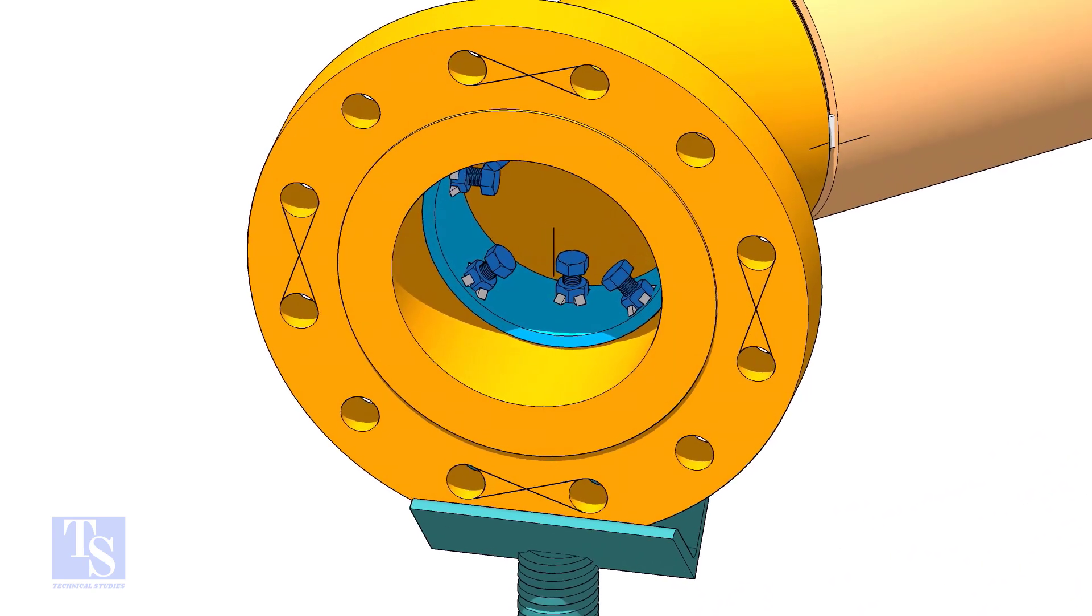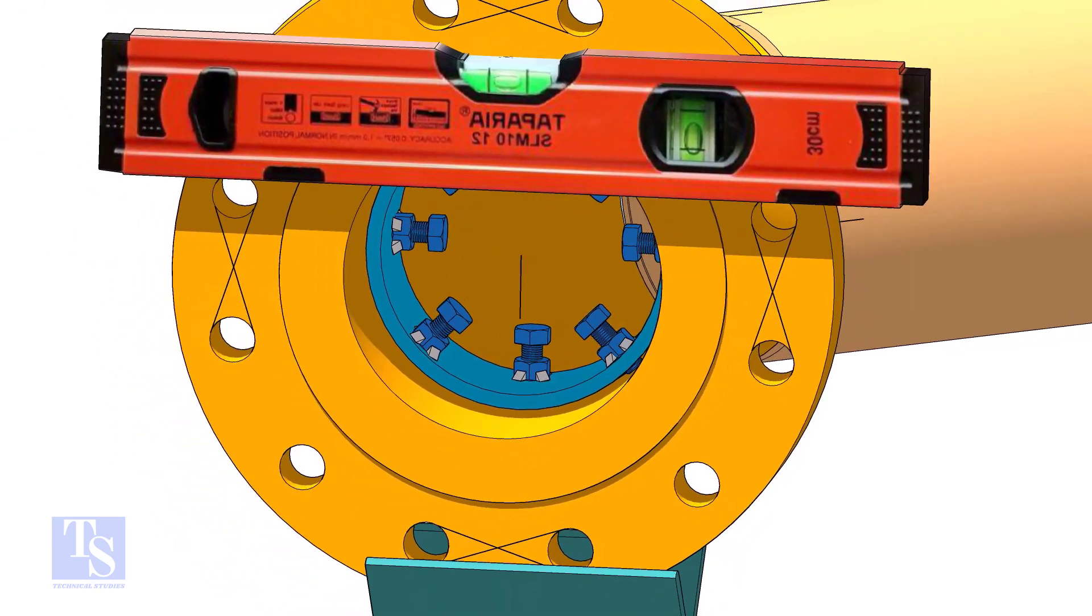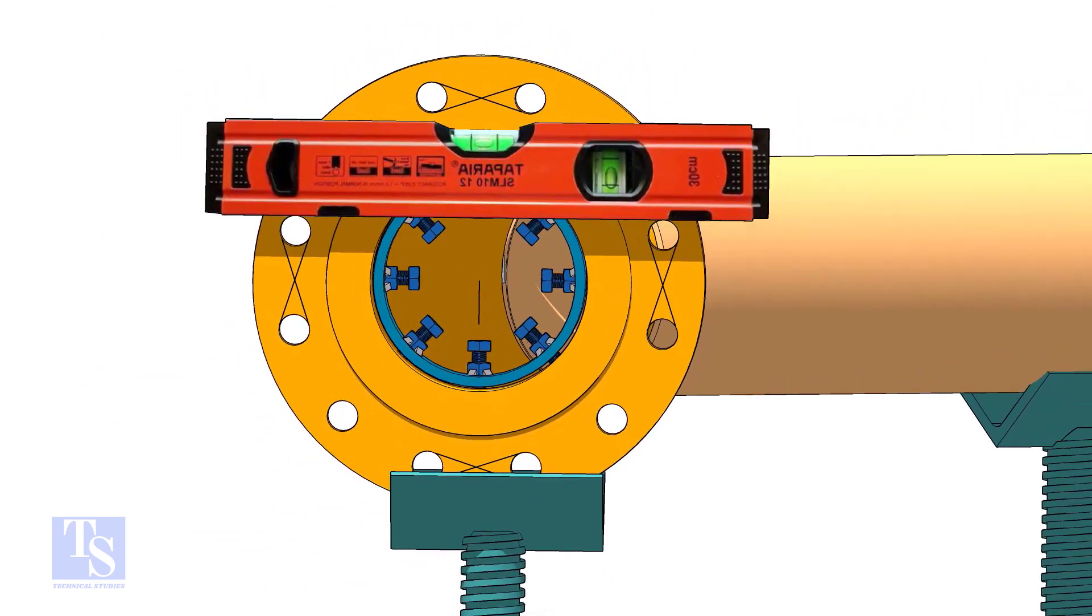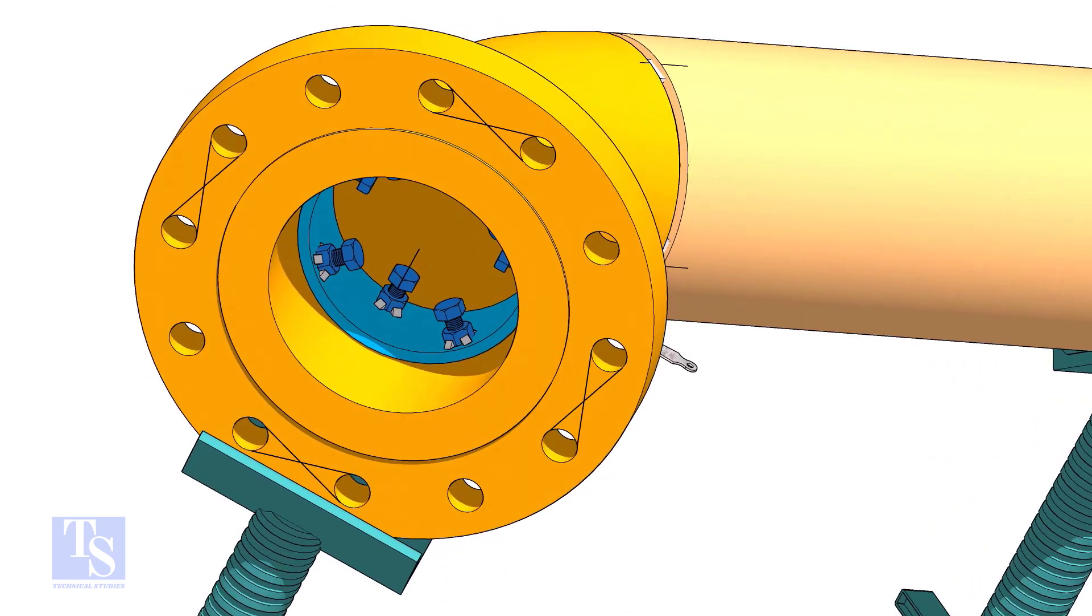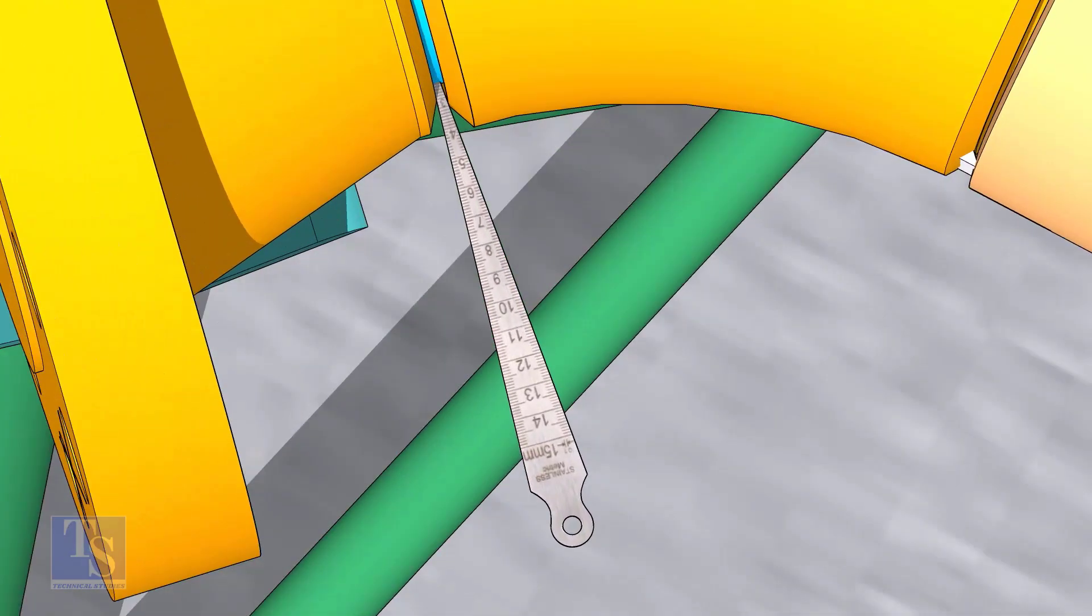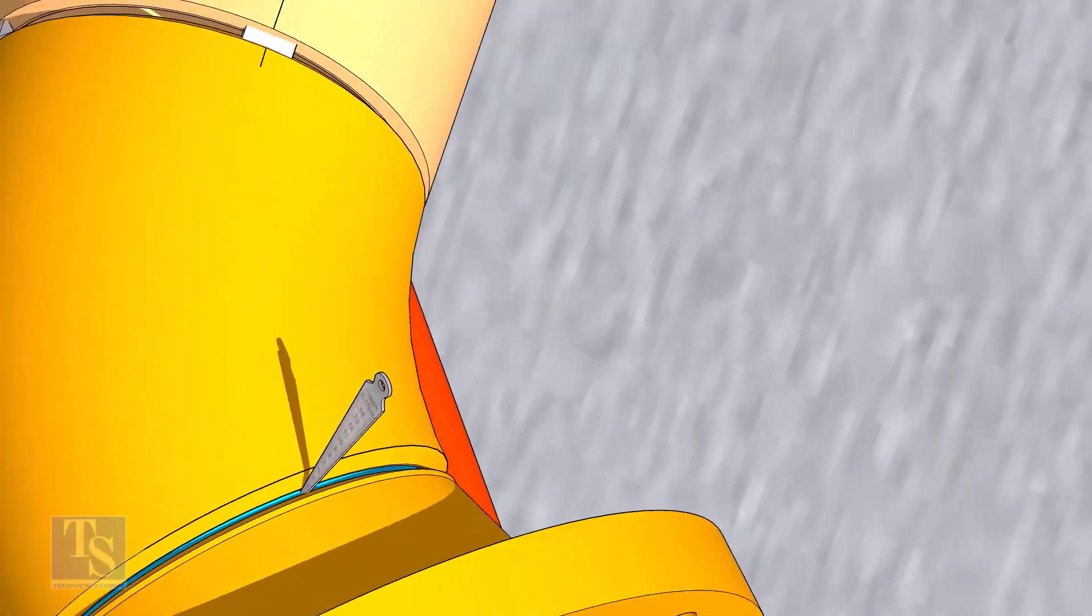Put the flange in its position and maintain the level. Tighten the clamp bolts lightly. Check the gap and the overlap. Tack weld on the top and bottom sides of the joint.